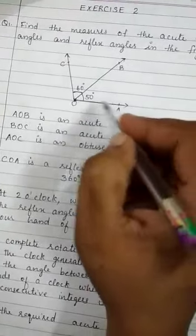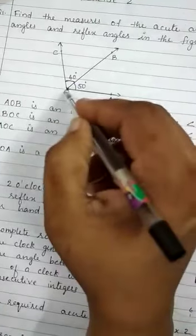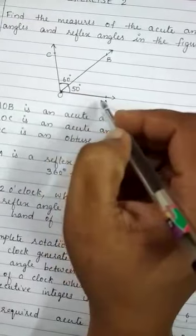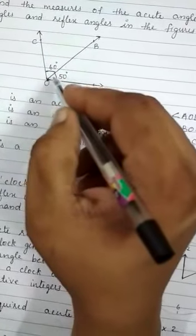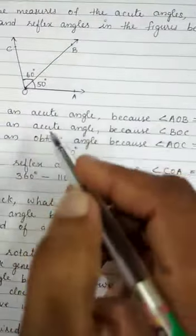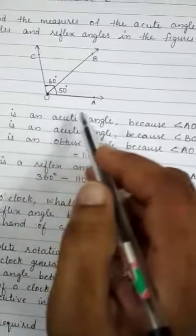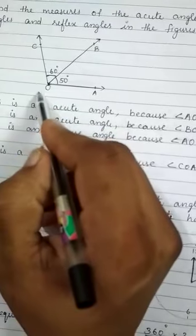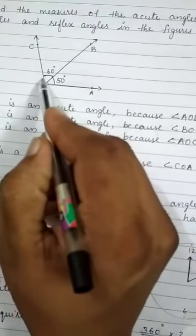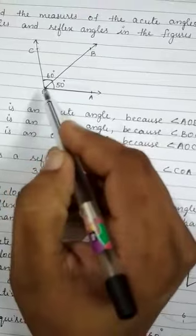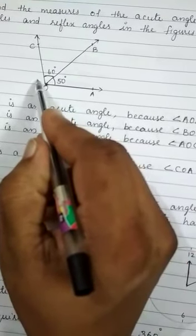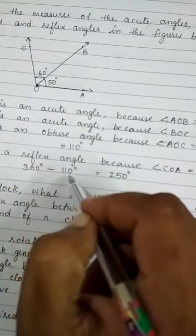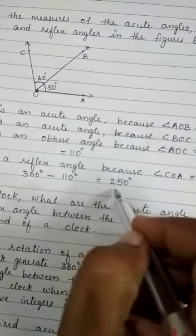Now, AOC. AOC is equal to AOB plus BOC. That is equal to 50 degree plus 60 degree, which is 110 degree. Therefore, AOC is an obtuse angle. Now, reflex angle COA. An angle at a point is 360 degree. Therefore, angle COA is equal to 360 degree minus 110 degree, that is equal to 250 degree.